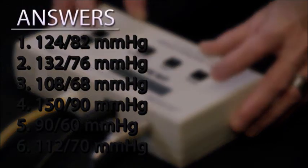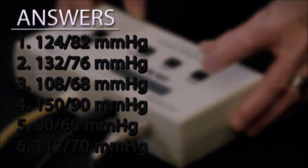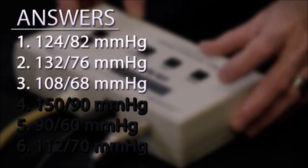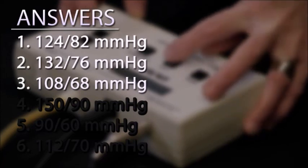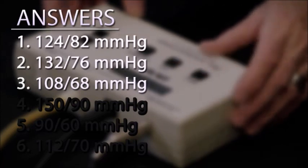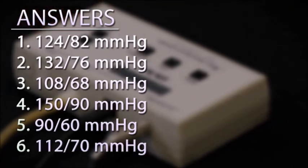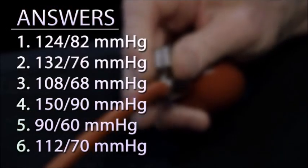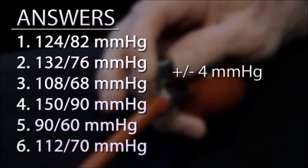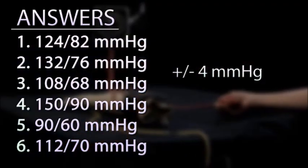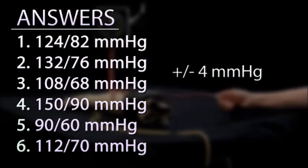Here are the answers to blood pressures 1, 2, and 3. And here are the answers to blood pressures 4, 5, and 6. Did you all come within plus or minus 4 millimeters mercury with your reading compared to the answers? That is the standard for accuracy for our course for the skill of measuring blood pressure.